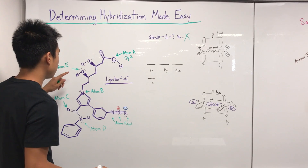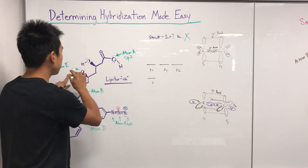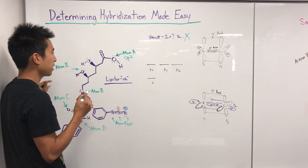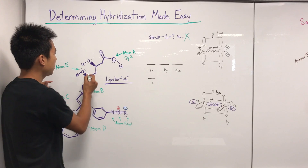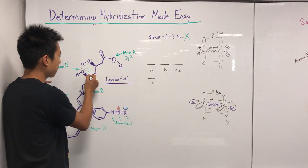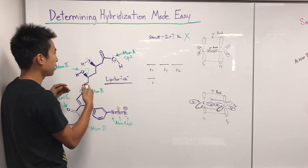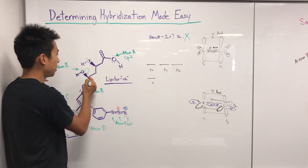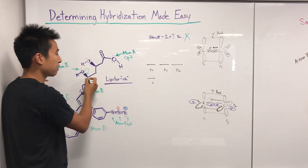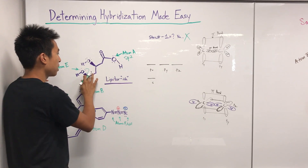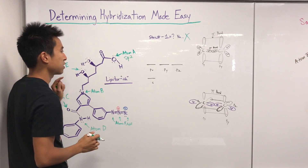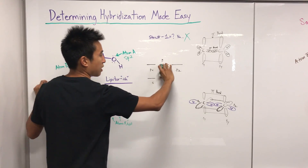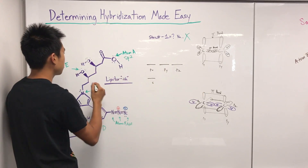Now let's do atom E. Can this oxygen resonate — what's the maximum number of pi bonds it can make? Hopefully you realize it's actually zero. It does have lone pairs, but they can't come down to the adjacent carbon because that carbon already has a hidden bond with hydrogen and can't accept another bond, nor give one away. So this oxygen can't sustain any pi bond, and all three p orbitals hybridize with its s orbital, creating four sp3 orbitals. Atom E is sp3.